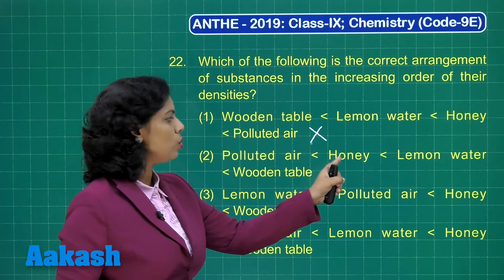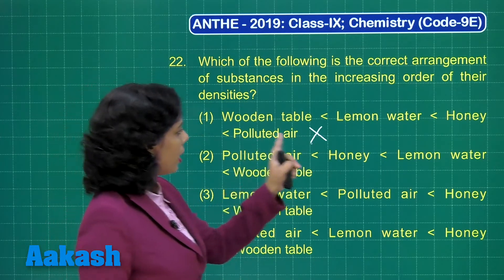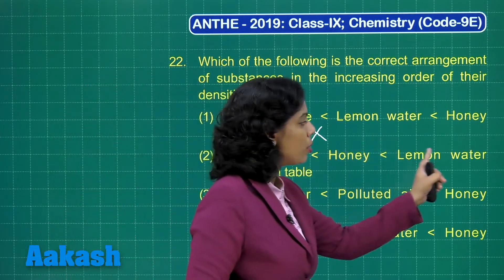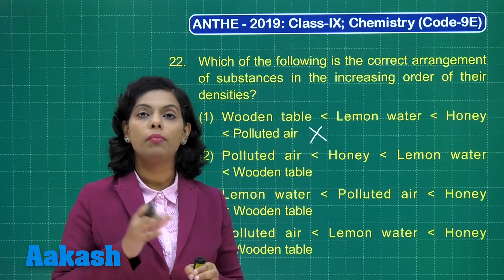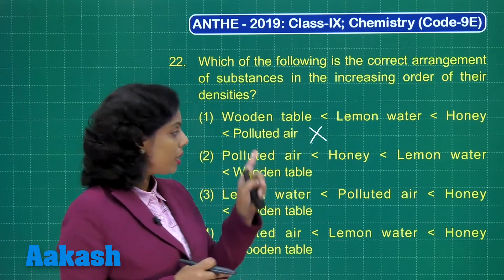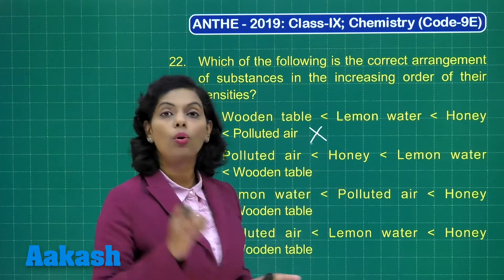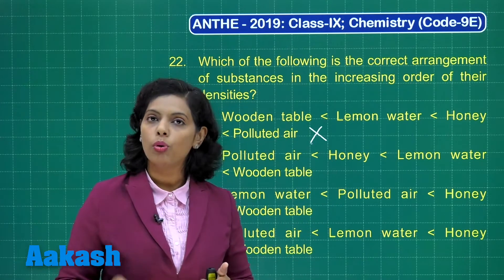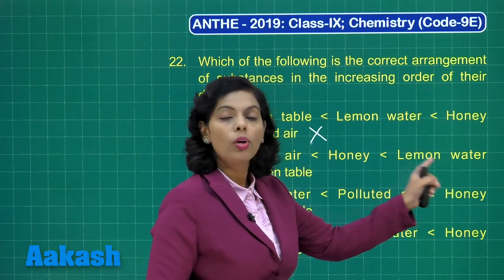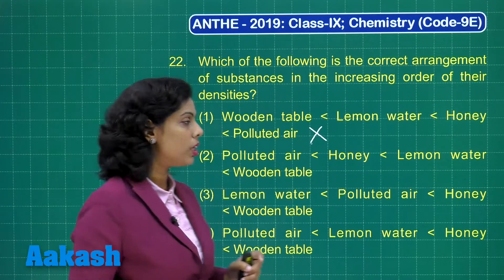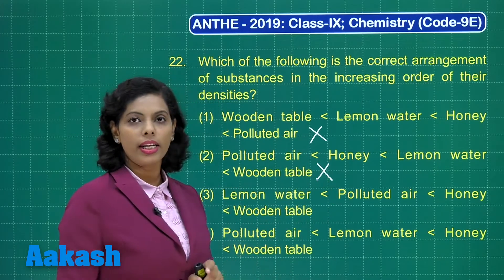Next, polluted air — air consisting of different poisonous gases — has less density as compared to honey. That is correct. But comparing honey and lemon water: the density of honey is always more than that of lemon water. So any option placing honey below lemon water in density is also incorrect, and I'll mark a cross there too.